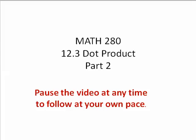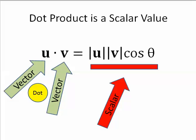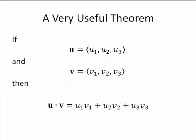Let's start off reminding ourselves of the definition of dot product. Given two non-zero vectors u and v, their dot product is the magnitude of u times the magnitude of v times the cosine of the angle between the two vectors. Recall that dot product is a scalar value, and we have a handy formula for calculating the dot product if we have the components of u and v.